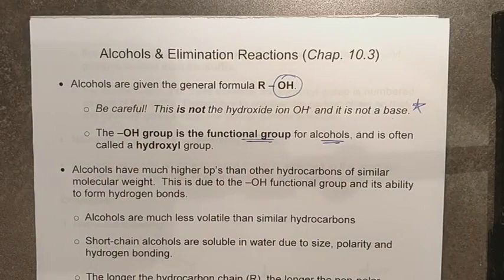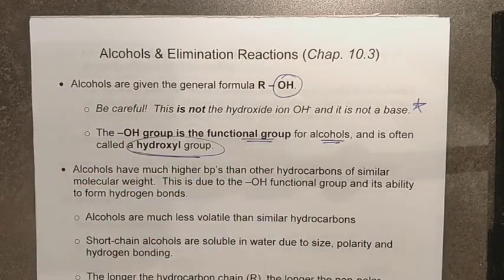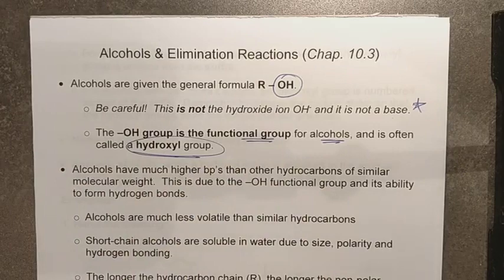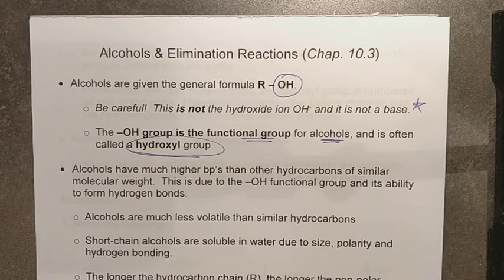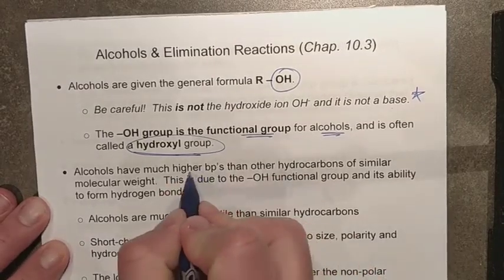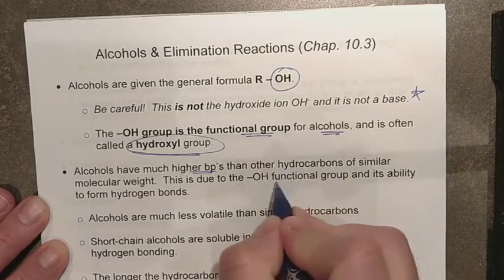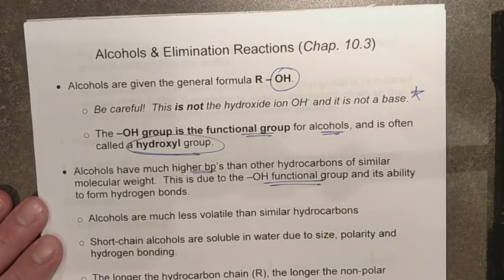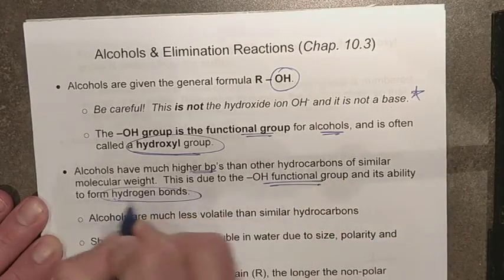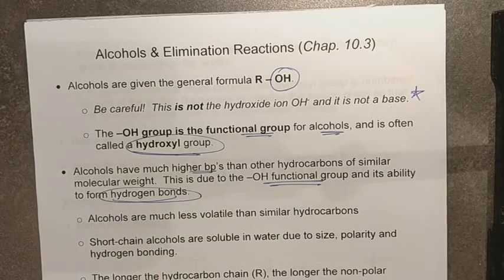This OH group gets a specific name - it is called a hydroxyl group. When one or more hydroxyl groups are present within the molecule, you have something that will behave functionally as an alcohol. Alcohols tend to have much higher boiling points than other hydrocarbons of similar molecular weight and size, because of the polarity of the OH functional group and its ability to form hydrogen intermolecular bonds.